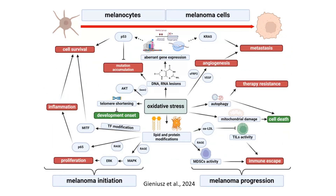This diagram illustrates how oxidative stress drives the progression from normal melanocytes to malignant melanoma cells, focusing on its role in melanoma initiation and progression. Oxidative stress serves as a central factor in melanomagenesis, leading to widespread cellular damage and dysfunction. It results from the imbalance between reactive oxygen species production and antioxidant defenses. In melanocytes, oxidative stress induces mutations in key genes like p53, which normally prevents uncontrolled cell growth. These mutations lead to aberrant gene expression and the accumulation of DNA and RNA lesions. Oxidative stress also accelerates telomere shortening, promoting genomic instability at the onset of melanoma development.